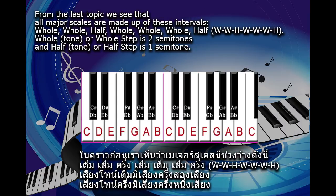From the last topic we see that all major scales are made up of these intervals: whole, whole, half, whole, whole, whole, half. A whole tone or whole step is two semitones, and a half tone or half step is one semitone.